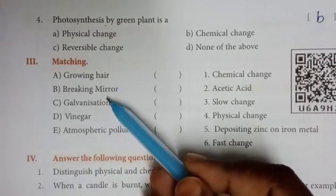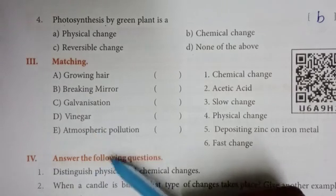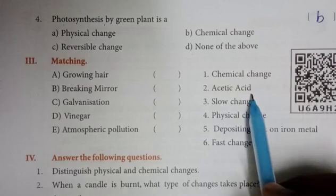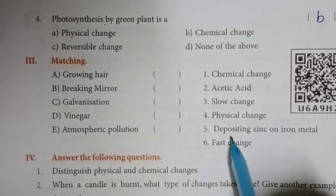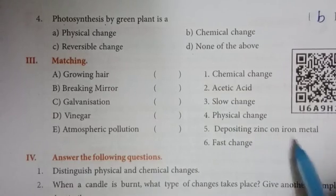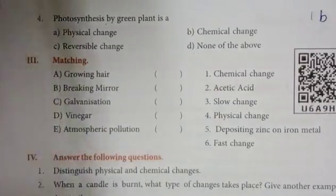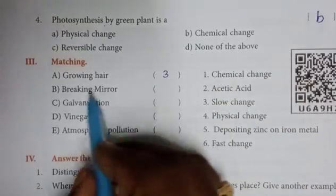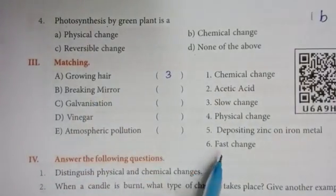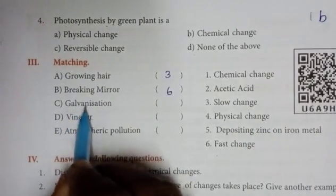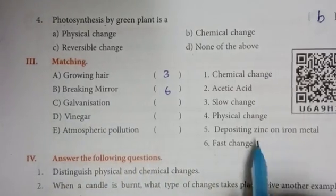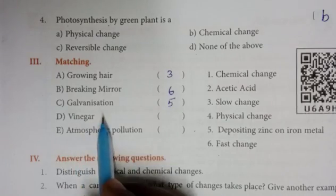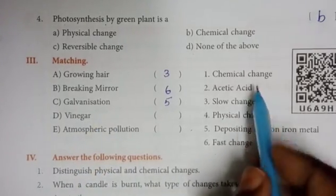Matching: growing heat — slow change; breaking mirror — fast change; galvanization — depositing zinc on iron metal; vinegar — acetic acid.